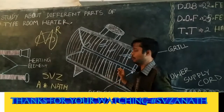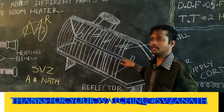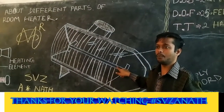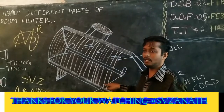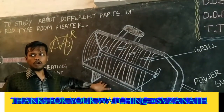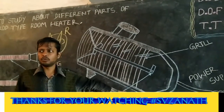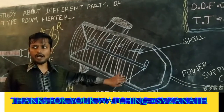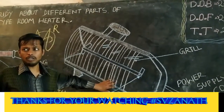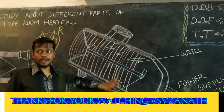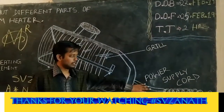In order to avoid direct contact with the heating element, a grill is provided on the heating element. Two numbers of feet are provided at the bottom of the room heater in order to stand it in position.